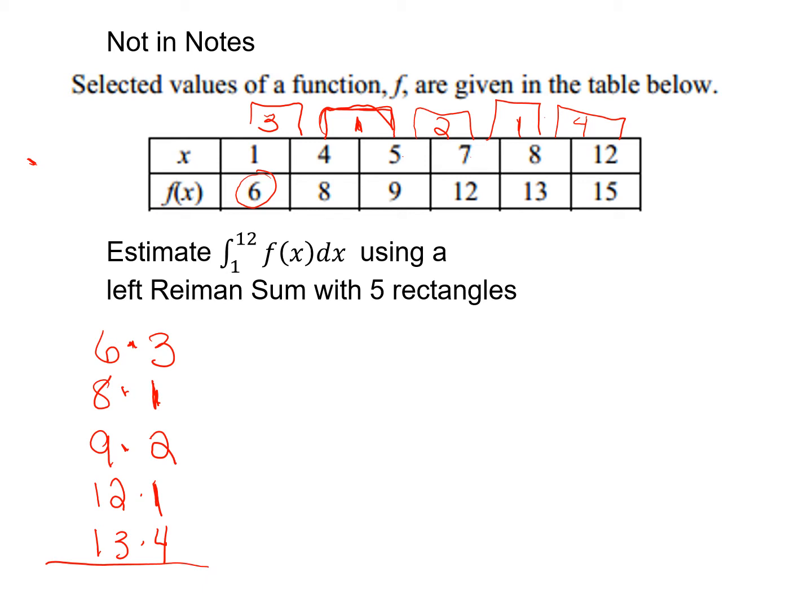Now, notice I did not use 15 because I'm doing a left Riemann sum. So I start at the left and I'm moving toward the right. And these are the widths of each of my rectangles. So now what I can do is I just find these values and add them up. So this is 18 plus 8, plus 18, plus 12, plus 52.